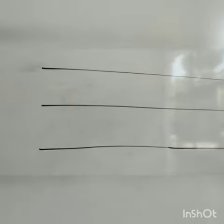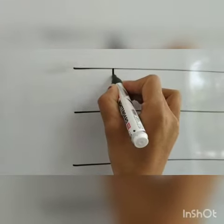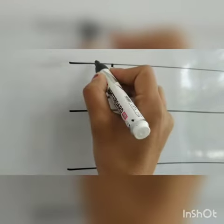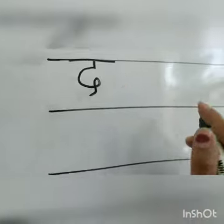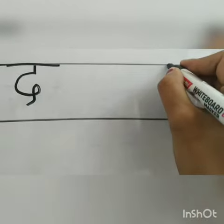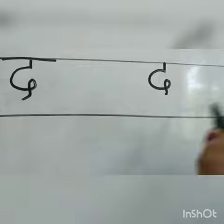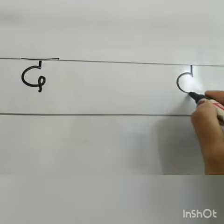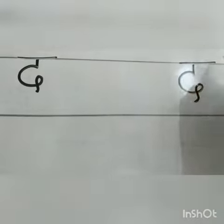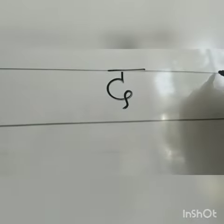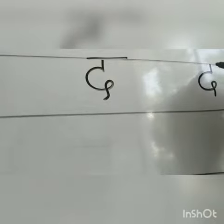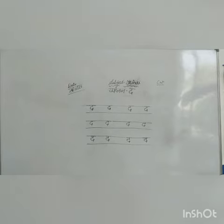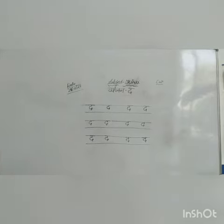Kids, for making da, first you have to make a standing line, then make like a C and a small tail, and a sleeping line on top. Let's write it again: standing line, make like a C and a small tail, and a sleeping line on top. This way you have to do your work in your Hindi notebook.